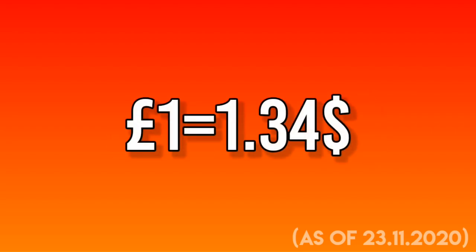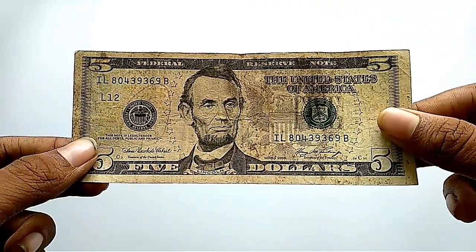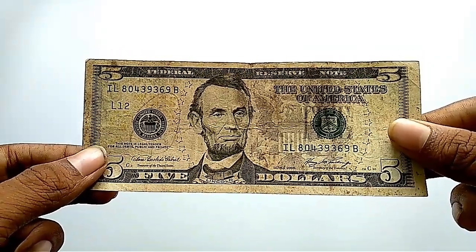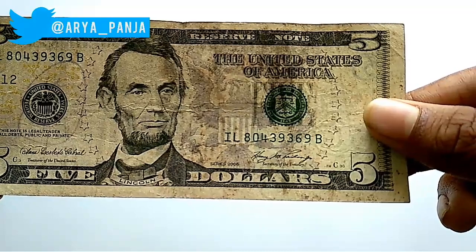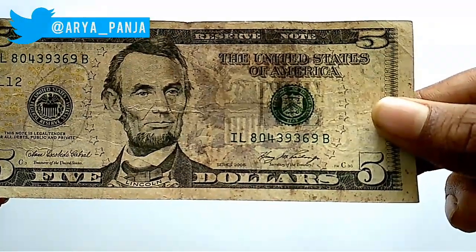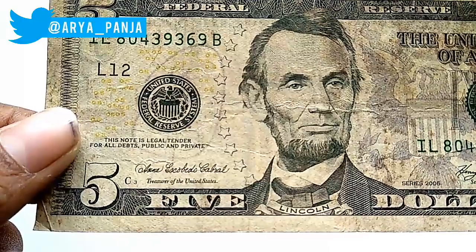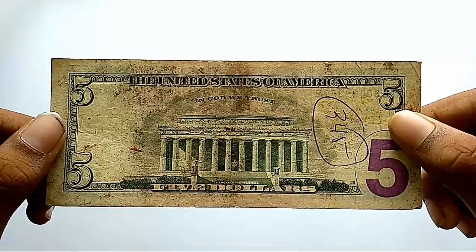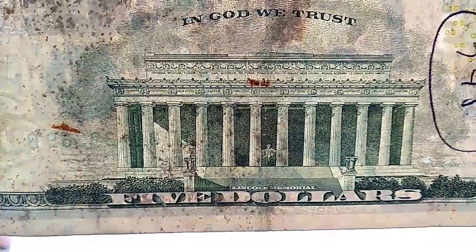The front of the banknote has a portrait of the 16th US president, Abraham Lincoln. On the right side of the portrait there is the coat of arms of the US, featuring an eagle and a shield. There is also an arc of stars which surrounds the portrait and the coat of arms.